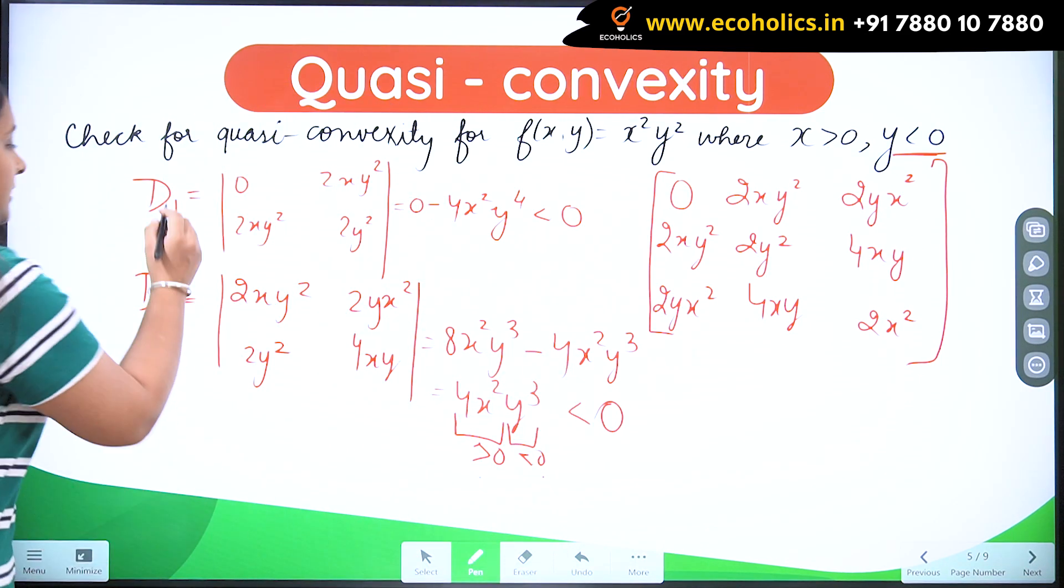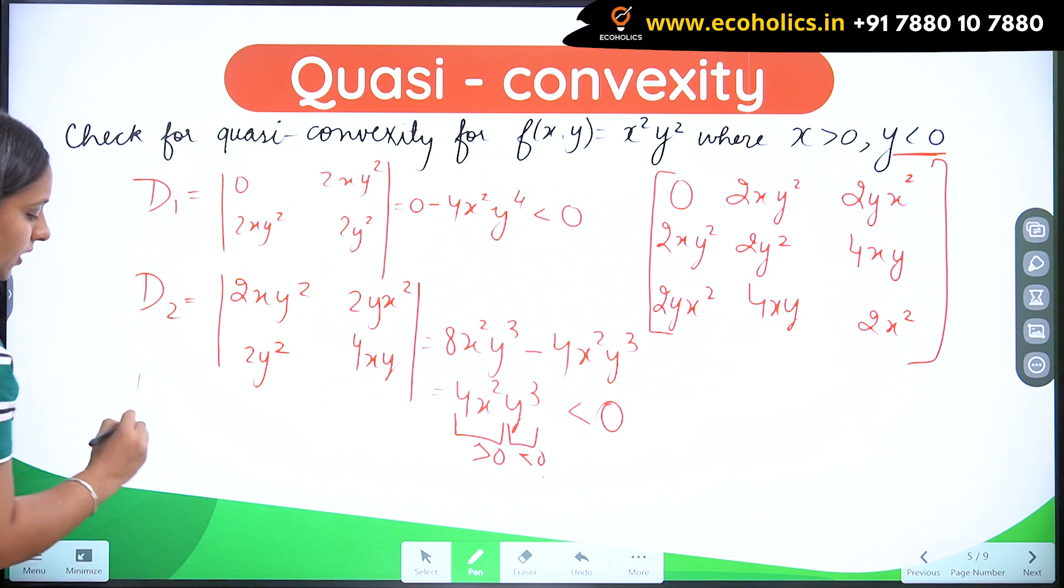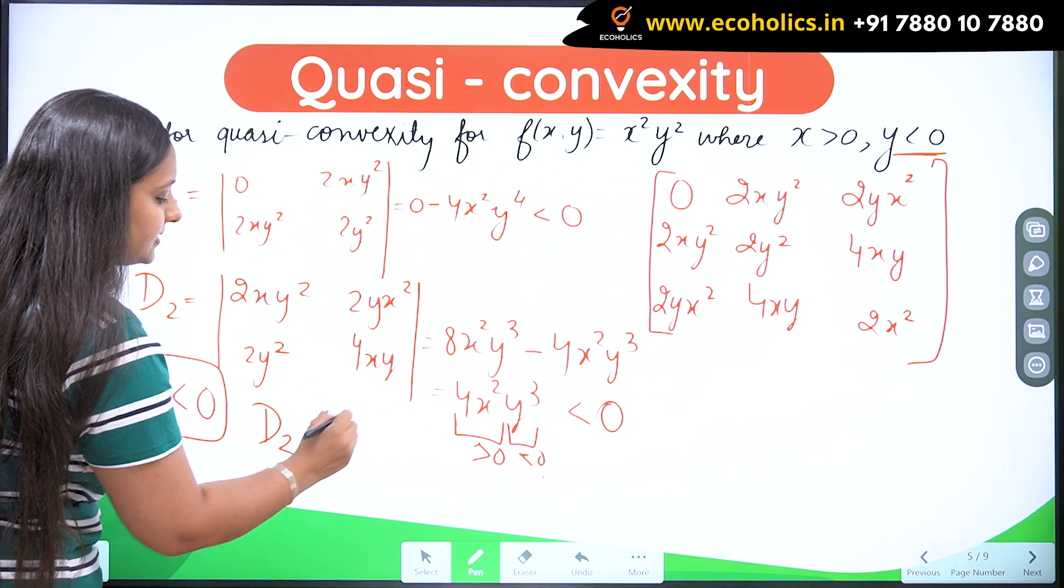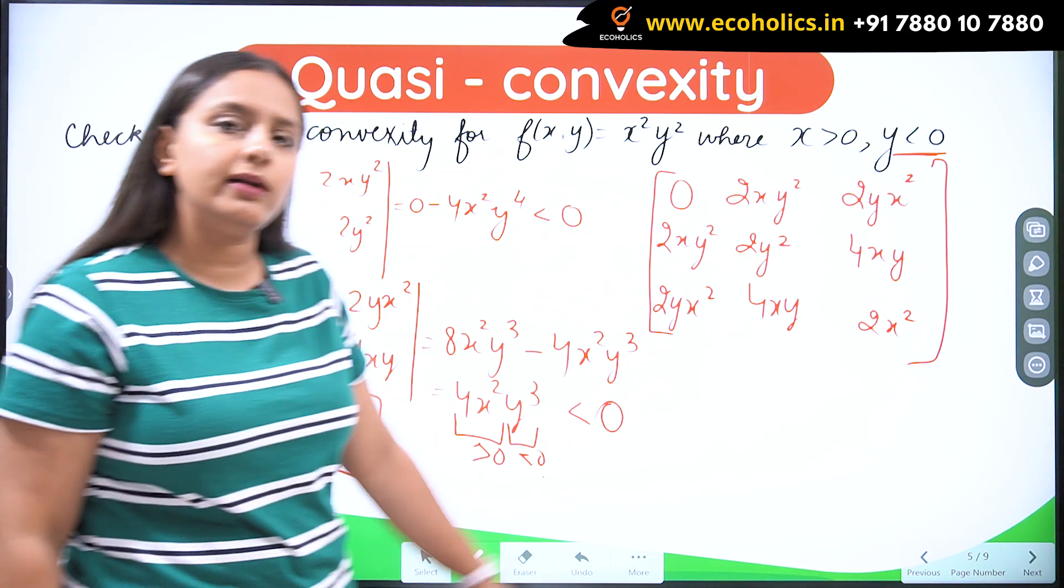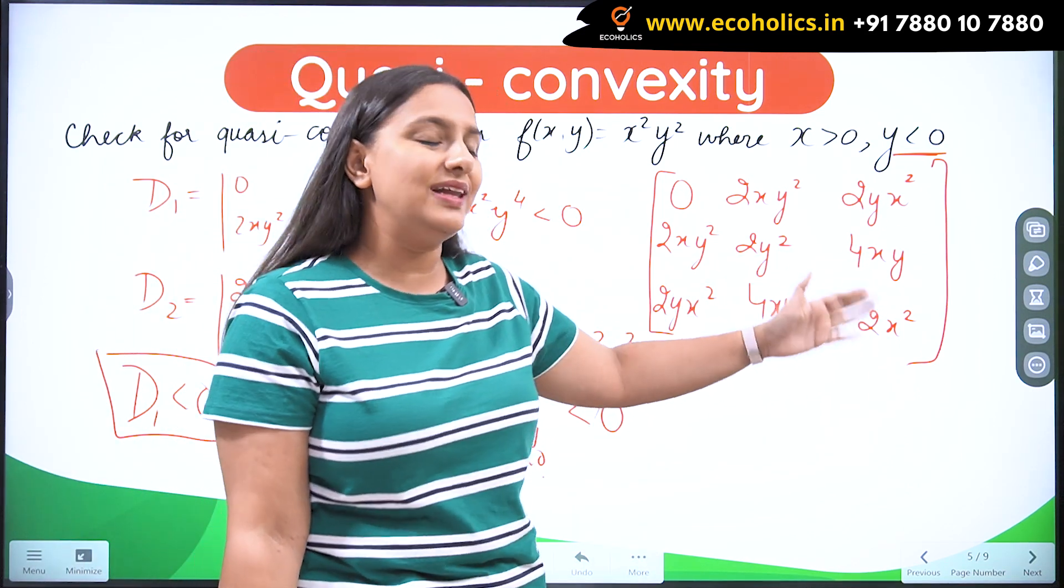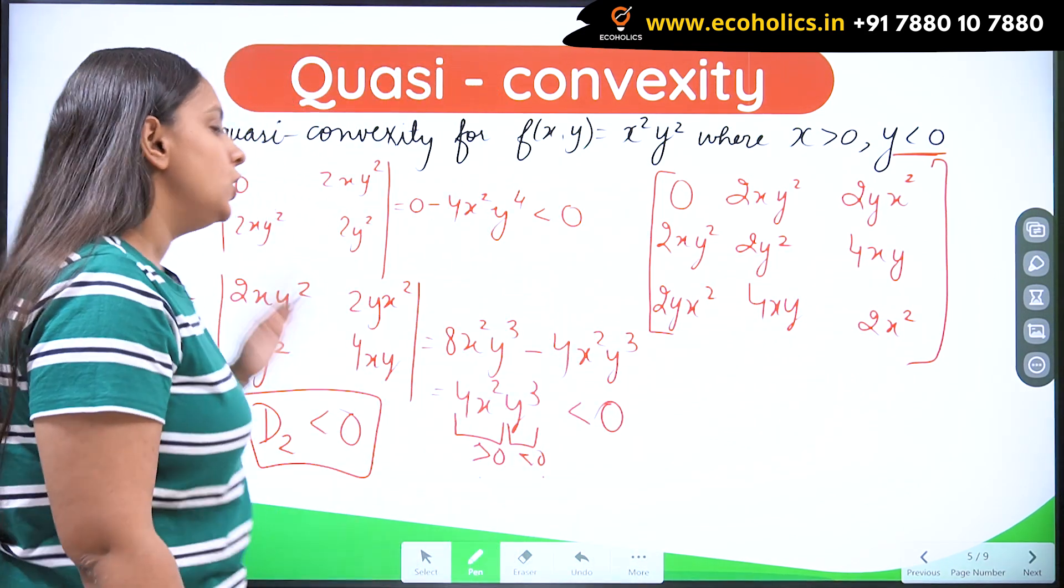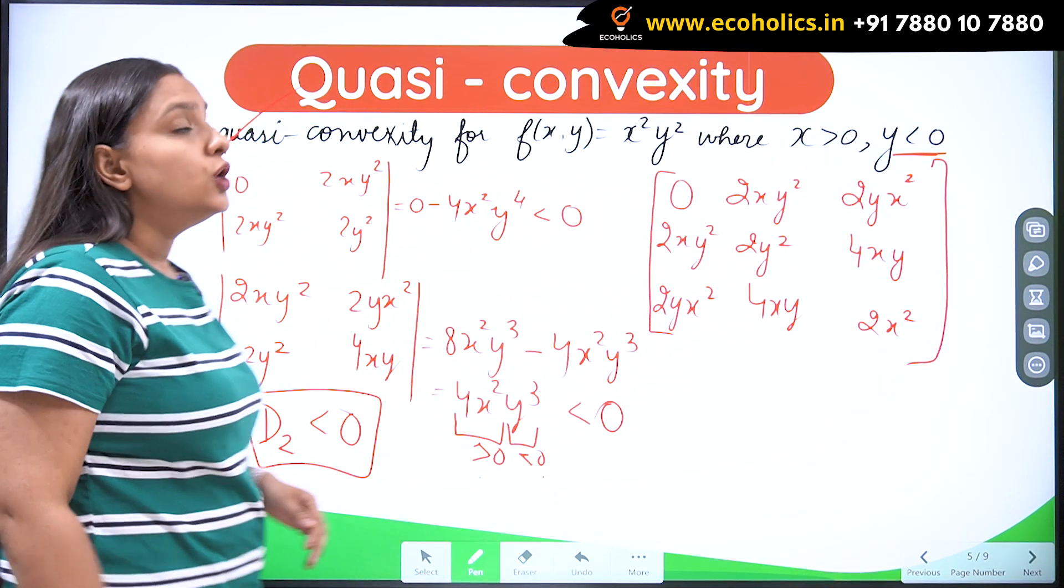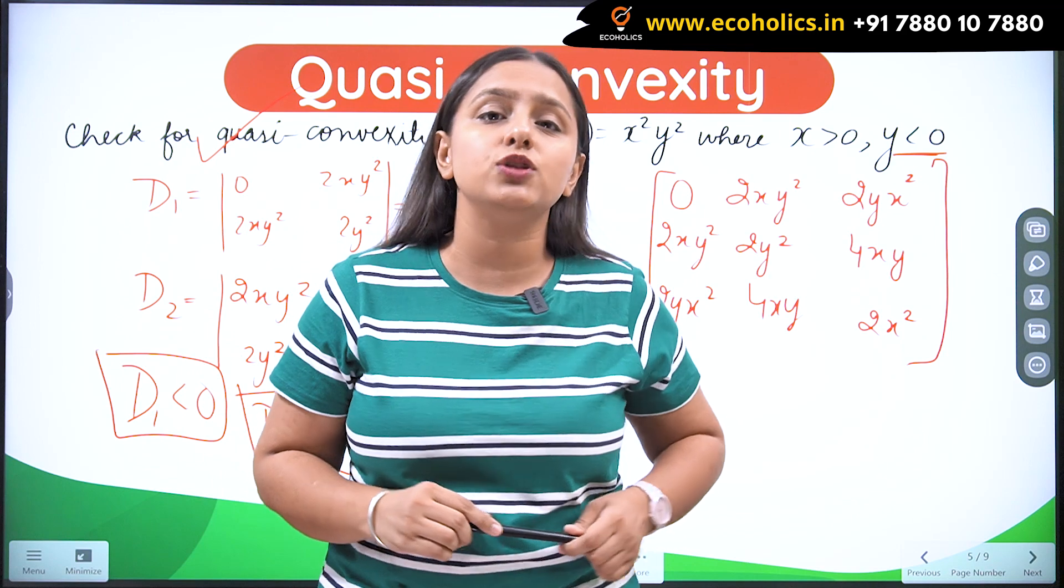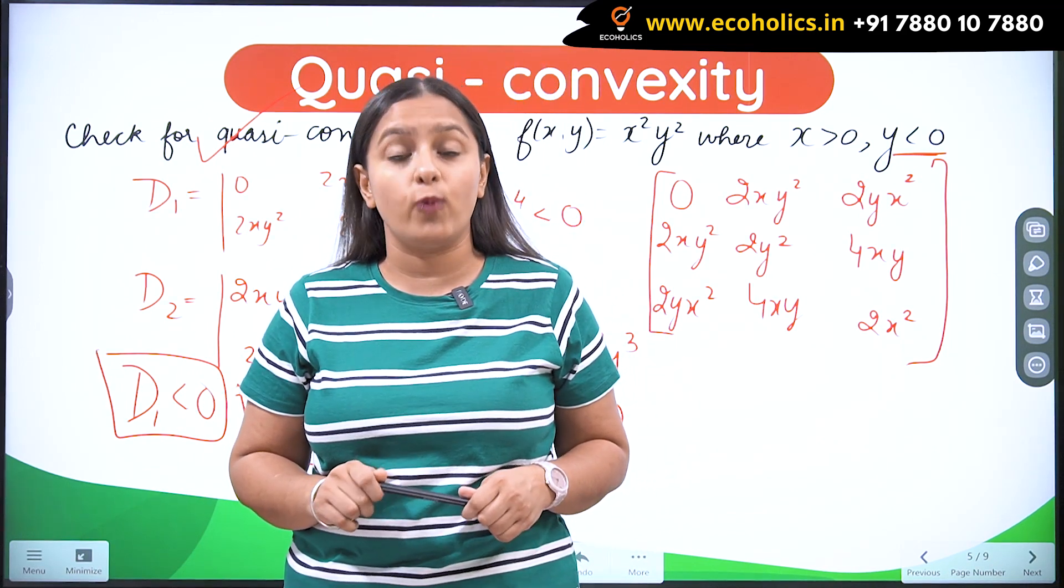So it means d1 is negative. Now I write it here, d1 is negative. Similarly, d2 is negative. So it means all the determinants are negative. No even-odd pattern is going to fall over here. So because of this reason, this function is quasi-convex. So this was the solution to this numerical problem of quasi-convexity.